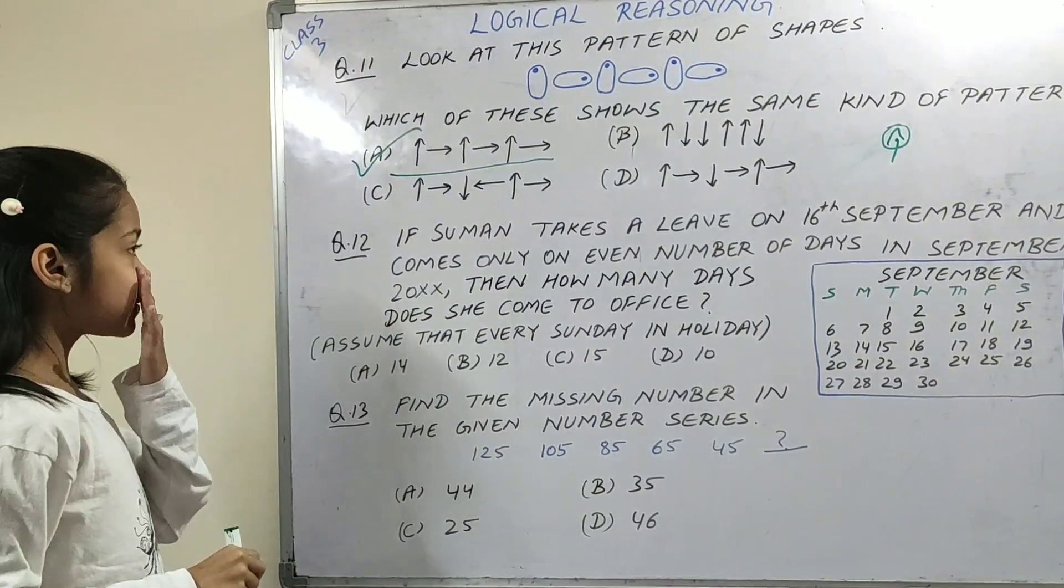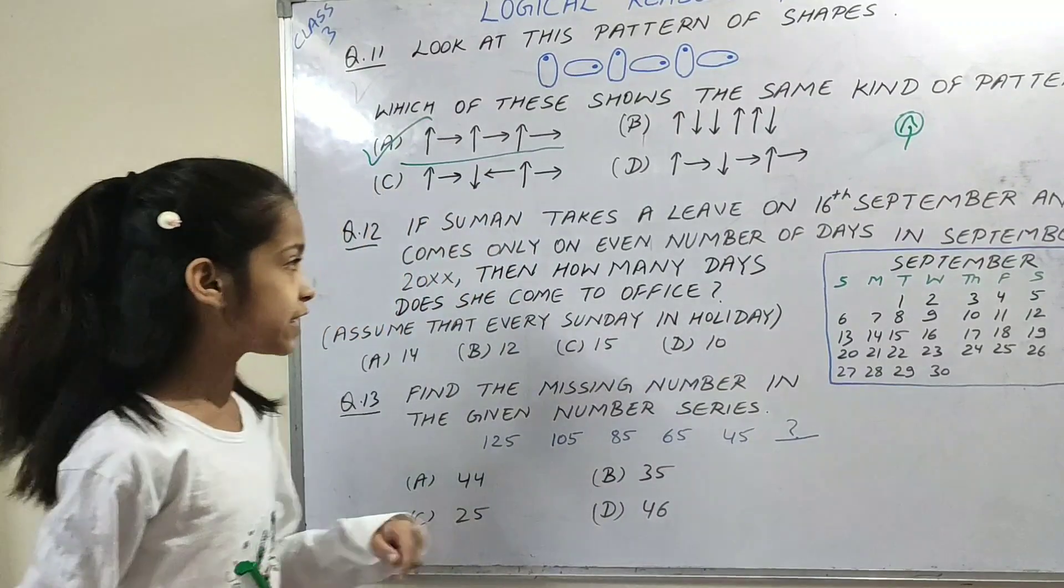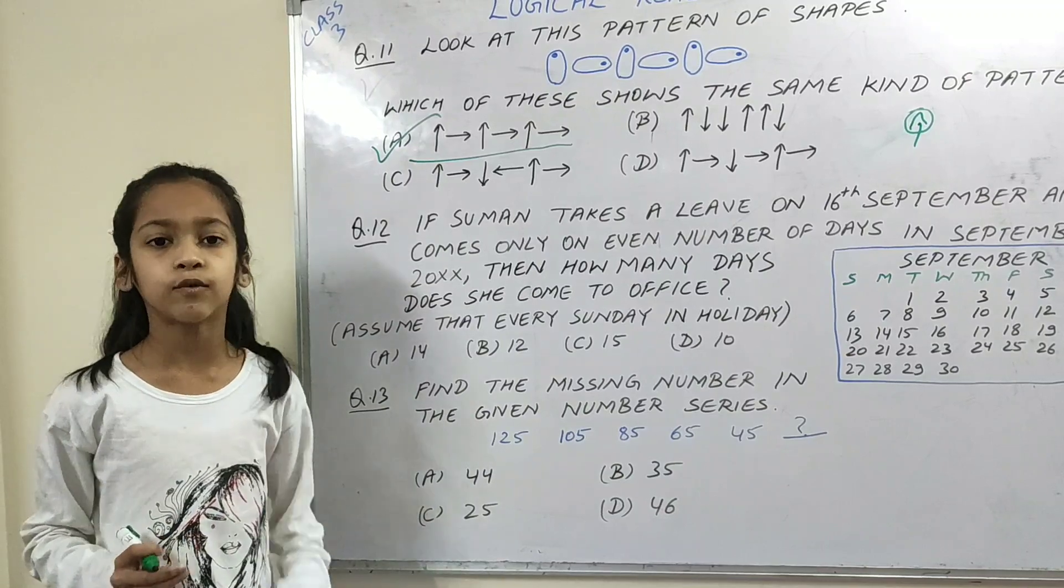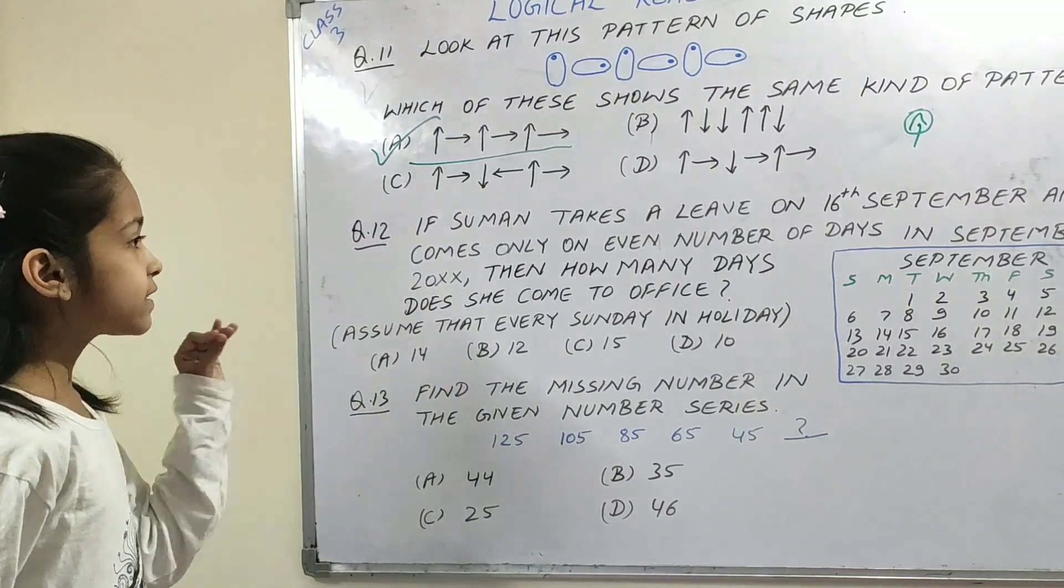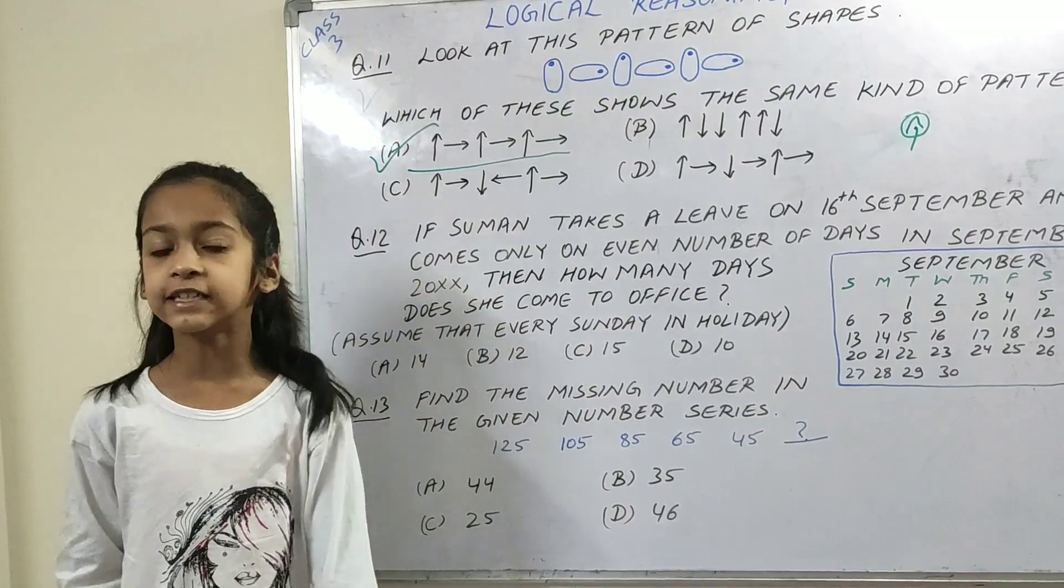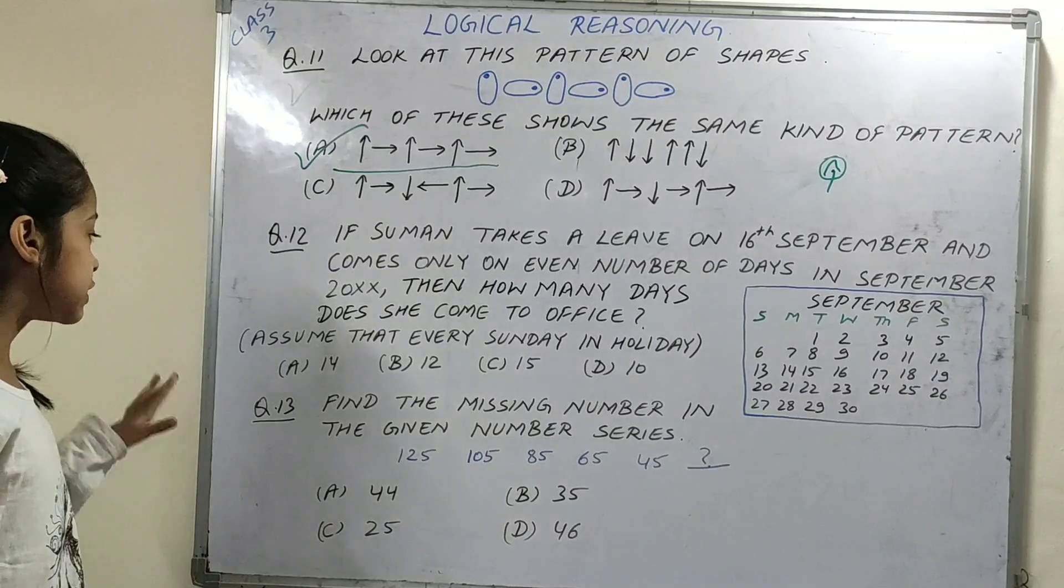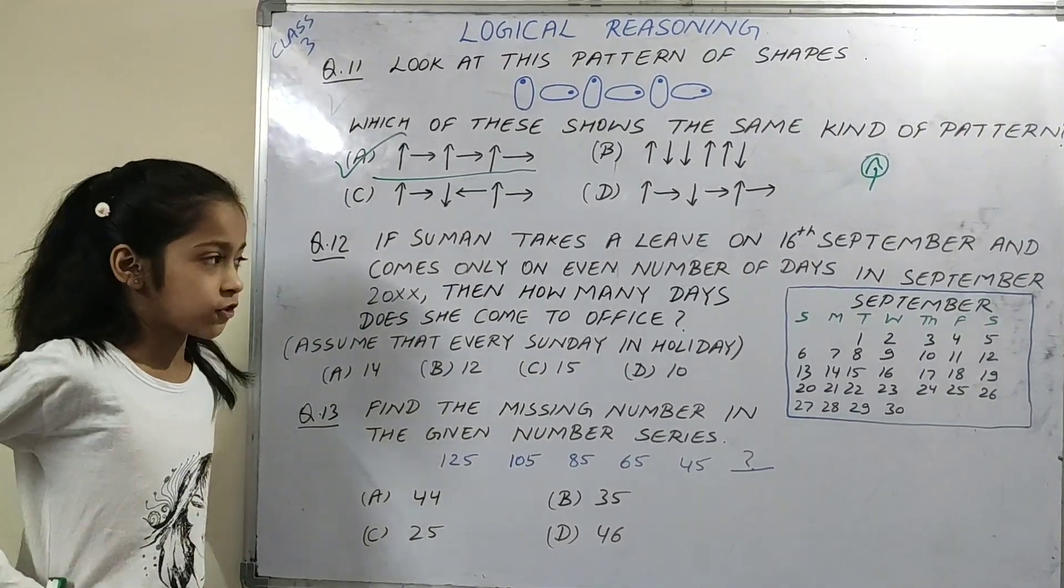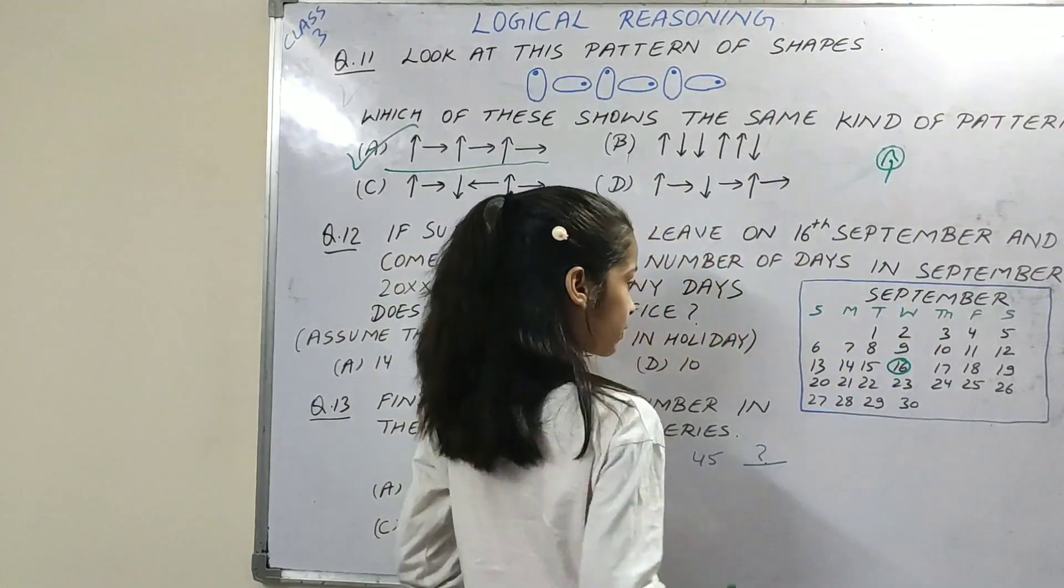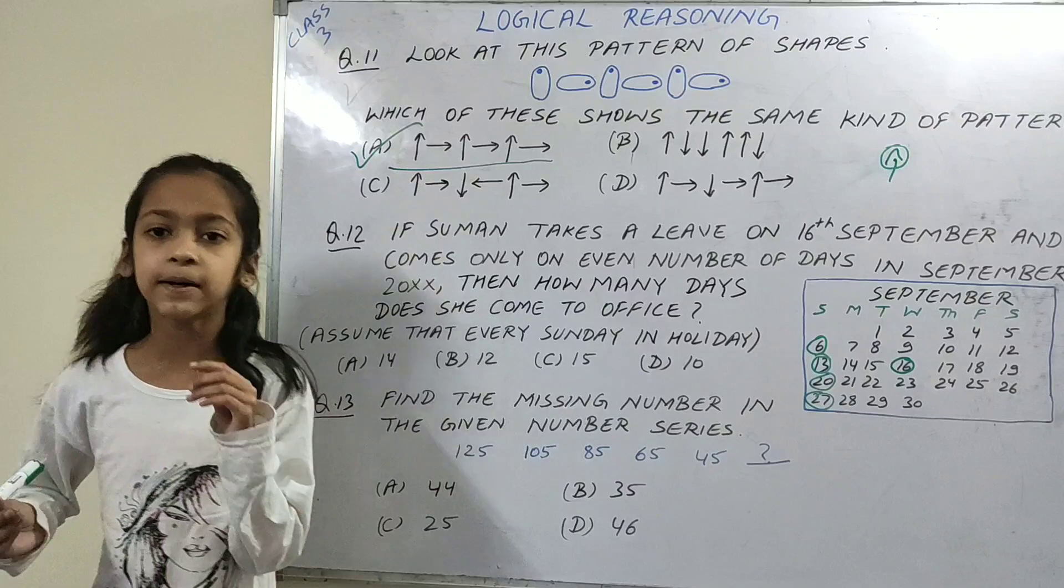Next question, if Suman takes a leave on 16th September and comes only on even number of days, when does she come to office? How many days does she come to office? Assume that every Sunday is a holiday. We will leave 16. We will not count Sundays and count only even numbers.